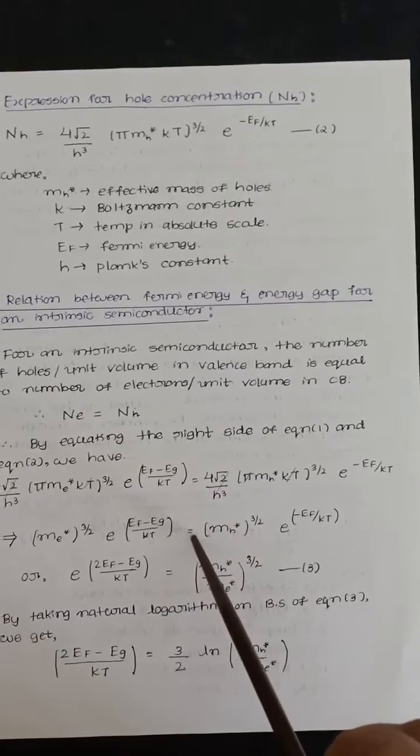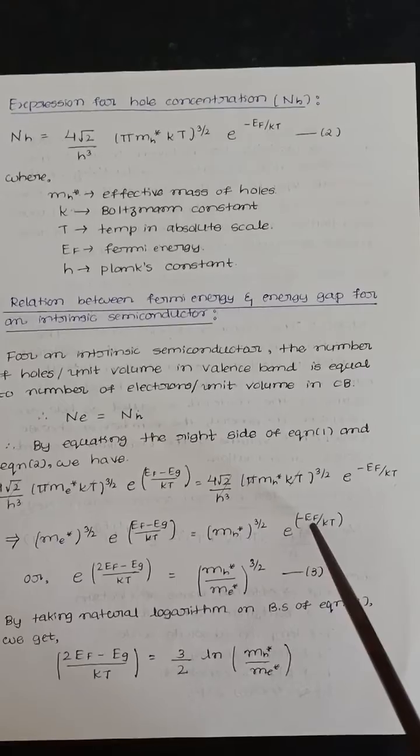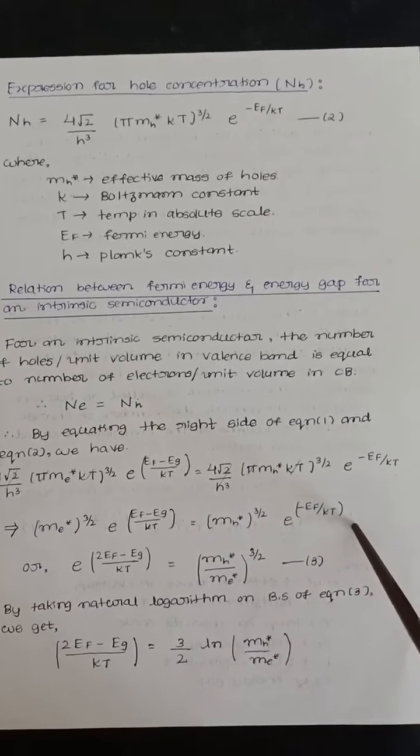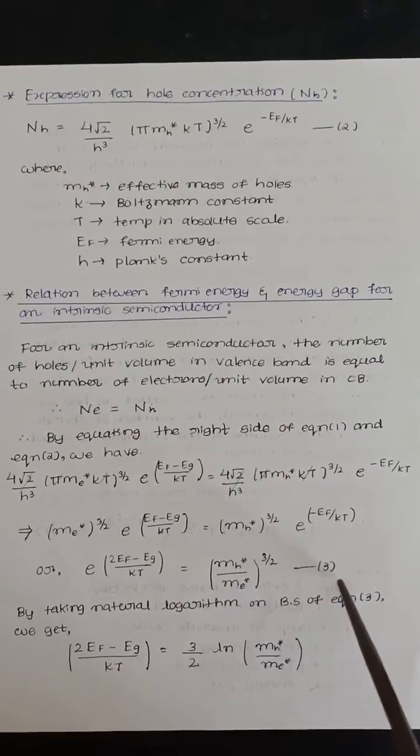That equals MH star power of 3/2 into e to the power of minus EF/KT. Or we can write it like this. Take it as equation number 3.